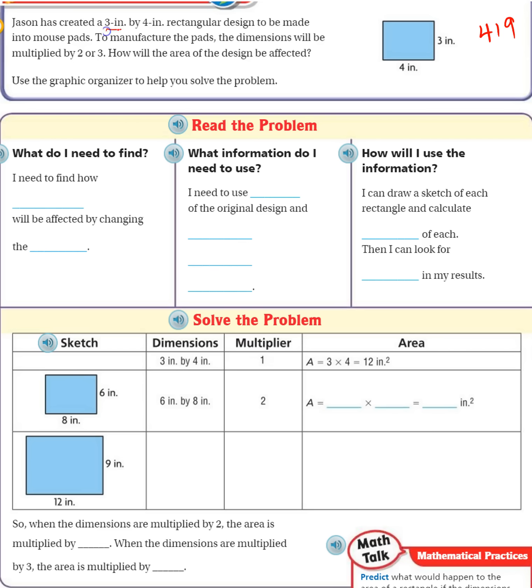It says, Jason has created a 3 inch by 4 inch rectangular design to be made into mouse pads. To manufacture the pads, the dimensions will be multiplied by 2 or 3. How will the area of the design be affected? Okay, so here is the mouse pad design, 4 inch by 3 inch.